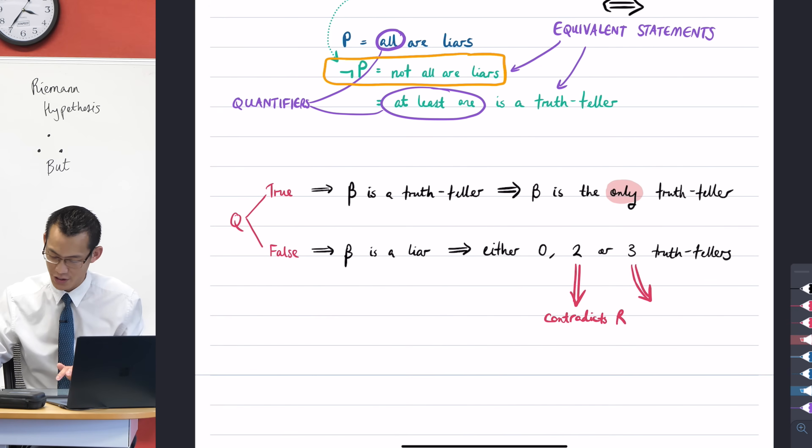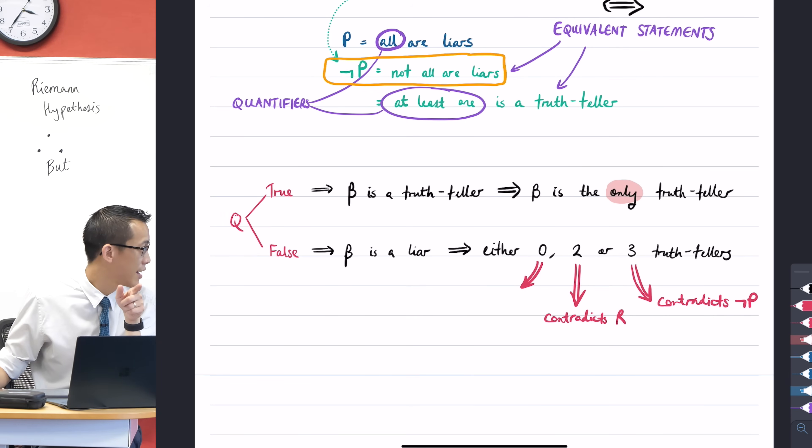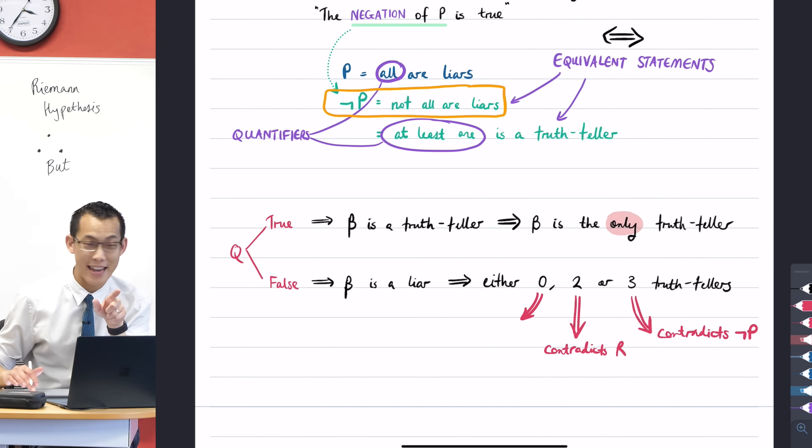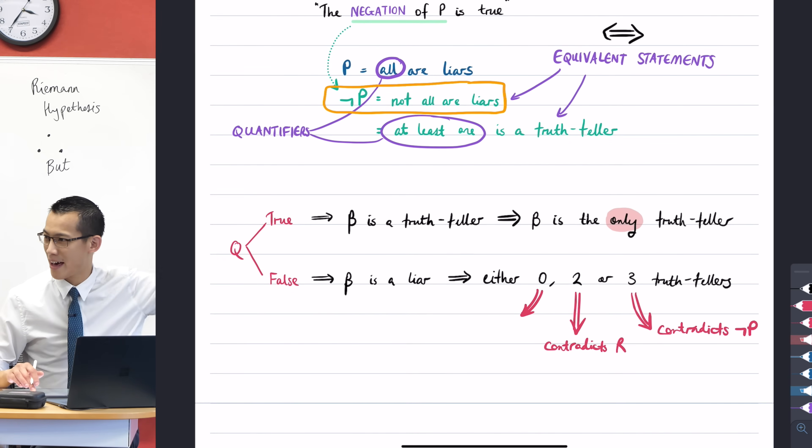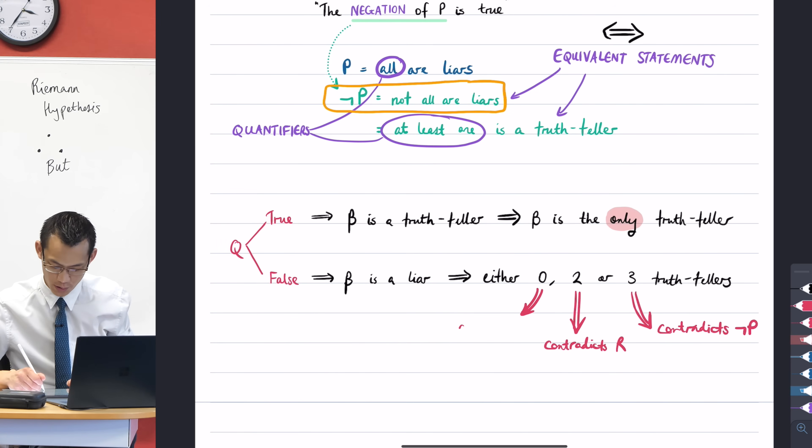So therefore, I can say, oh, there's a contradiction here with not P. And that's actually the same for the last case. See this one? Do you see that's also contradicted? Think about this. There can't be zero truth-tellers, because we know there has to be at least one truth-teller. Do you remember that? I wrote it up in green before. So this also contradicts not P.